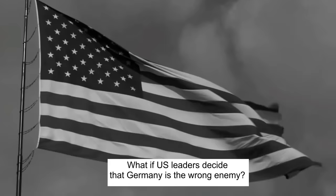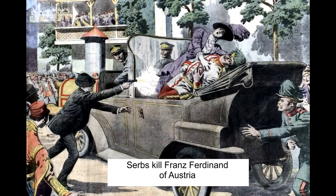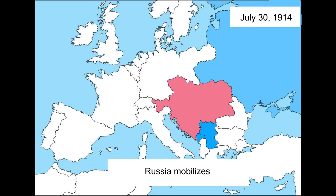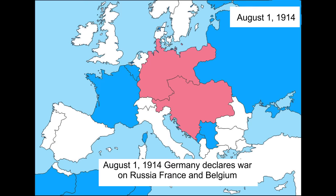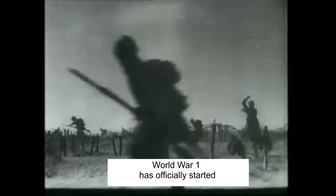What if USA leaders decided that Germany was the wrong enemy? June 28, 1914, Sarajevo: Serbs kill Franz Ferdinand of Austria, heir to the Austro-Hungarian throne. July 28, 1914, Austria-Hungary declares war on Serbia. Russia mobilizes. August 1, 1914, Germany declares war on Russia, France, and Belgium. August 4, the United Kingdom declares war on Germany. August 25, Japan declares war on Germany. World War I begins.